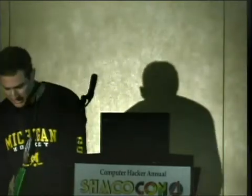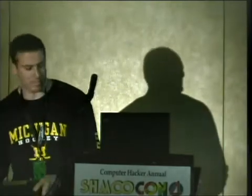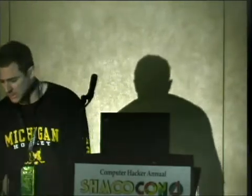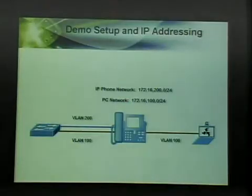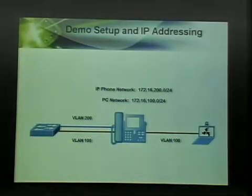Here's my demo. I've got a Catalyst 3560 Power over Ethernet switch. I've got the BackTrack Linux distribution running on an attacker laptop, and I've got a Cisco Unified IP phone. The voice VLAN is 200, the PC VLAN is 100, and you can see the IP addressing on screen.